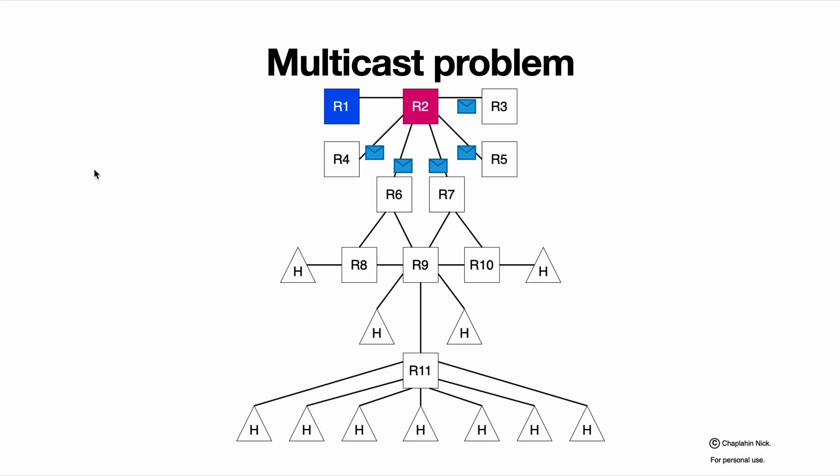And in case of having loops between routers, like for example R9 will receive the same packet from R6 and R7 and will try to send two packets to its neighbors and to the following destinations. That is a problem as well.